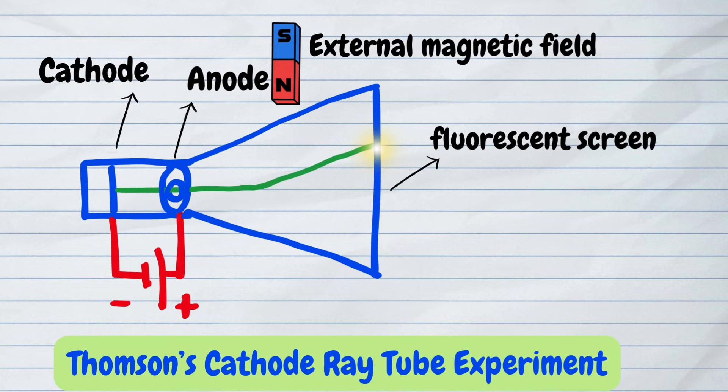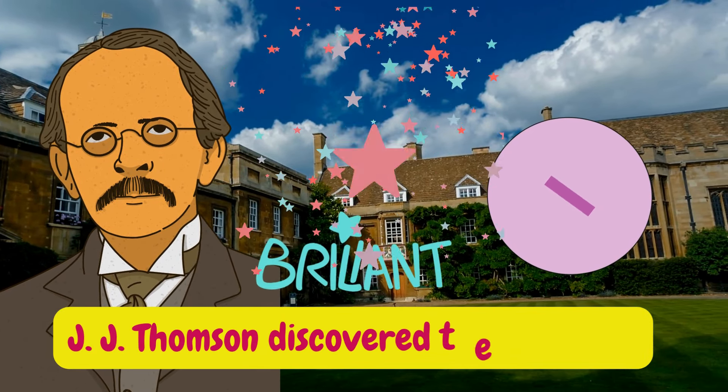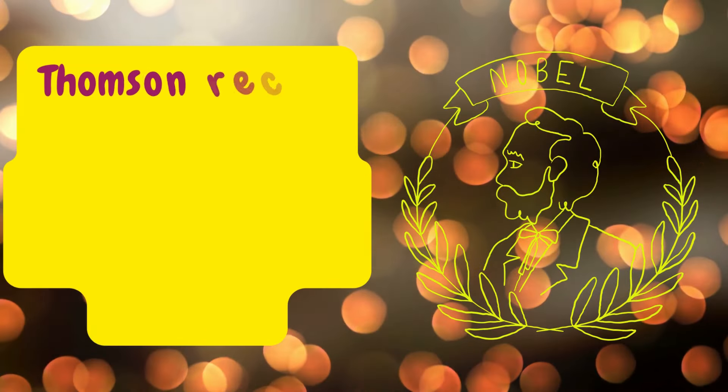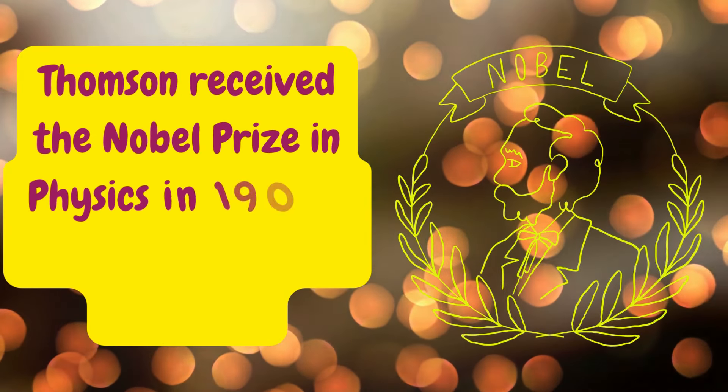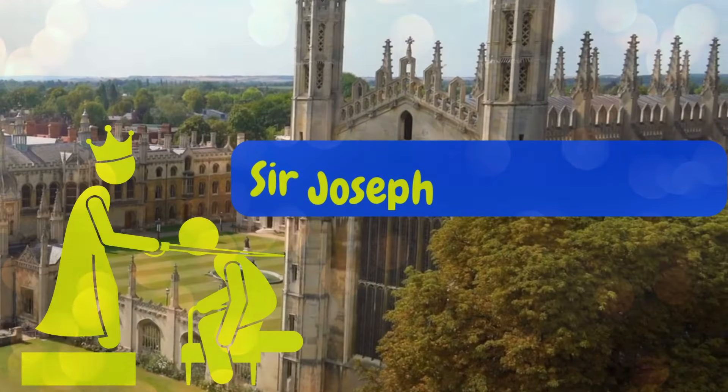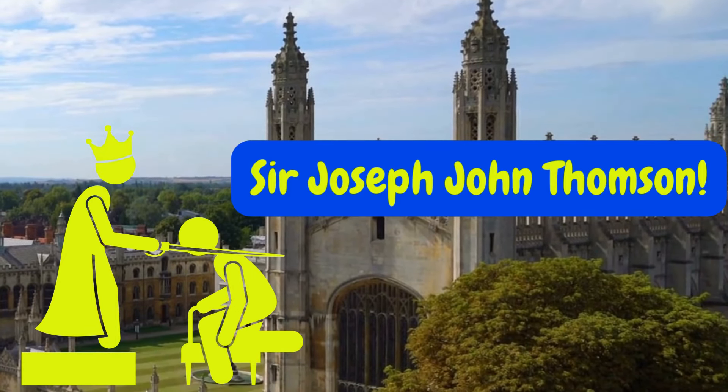Thompson had discovered the electrons, challenging the notion that atoms were indivisible. Thompson received the Nobel Prize in physics in 1906 for his discovery of the electrons. He was knighted in 1908 and became Sir Joseph John Thompson.